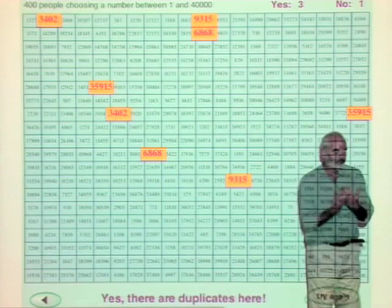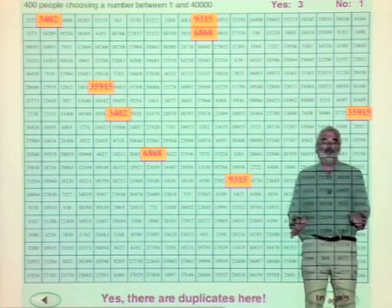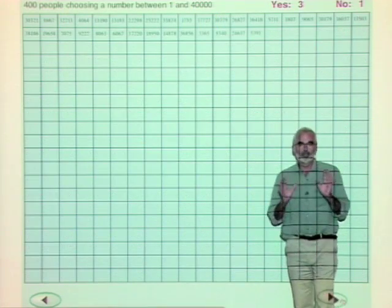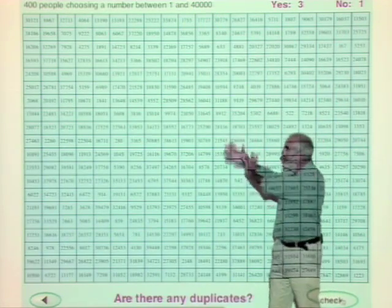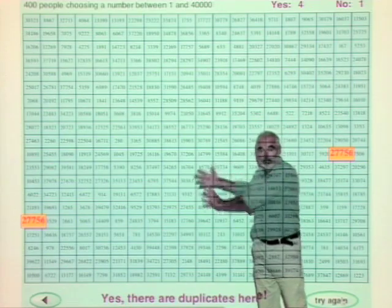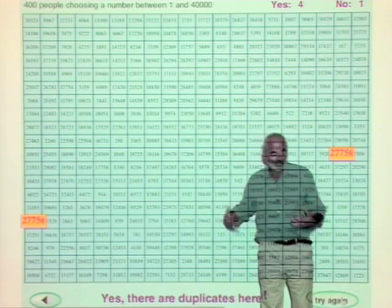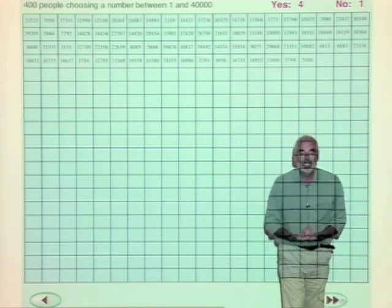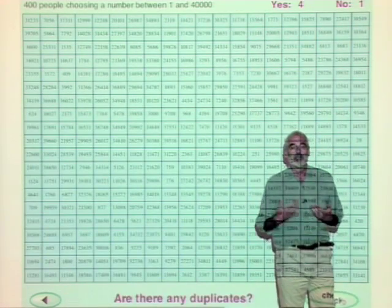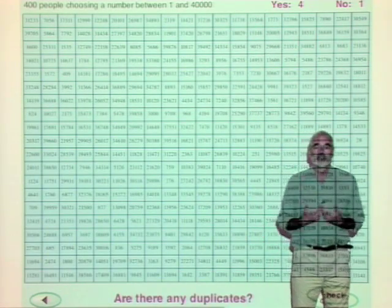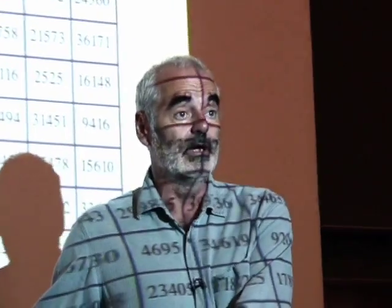This is just one result of the maths of coincidence. It shows that if there's enough opportunities — so many pairs exist here — if there's enough opportunities for a rare event to happen, that rare event is very likely to happen. If you want to see the maths of why this works and why the n over 2 squared trick works, you'll have to go and look at our website.